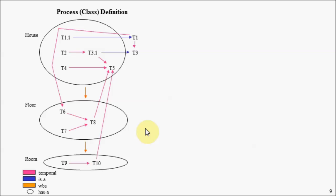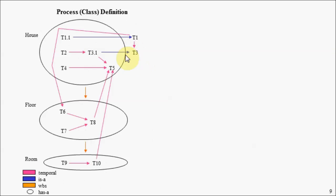Let's now look at our finished process definition. In the last slide, we were putting together a definition of a room with tasks T9 and T10 and the temporal relationship between them. Here's our floor definition, and here's our definition for the higher-level entity called a house. Notice that we have a task called T1.1, which is a specialization of a more general task called T1. Similarly, T3.1 is a specialization of T3. There are temporal relationships between these general tasks, and also temporal relationships between tasks that cross entity boundaries.